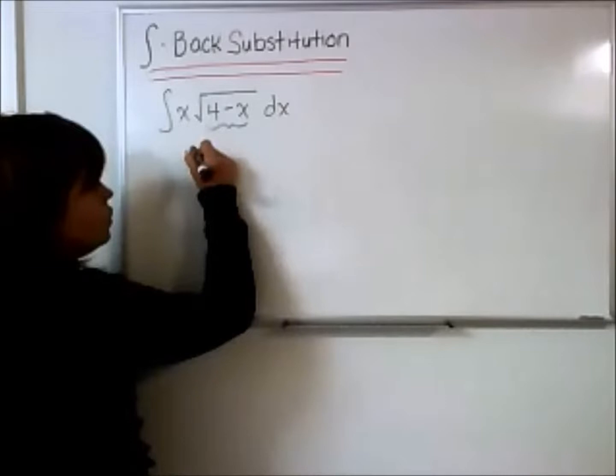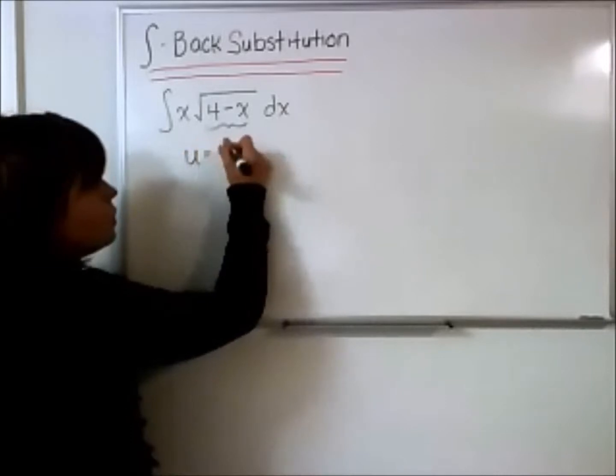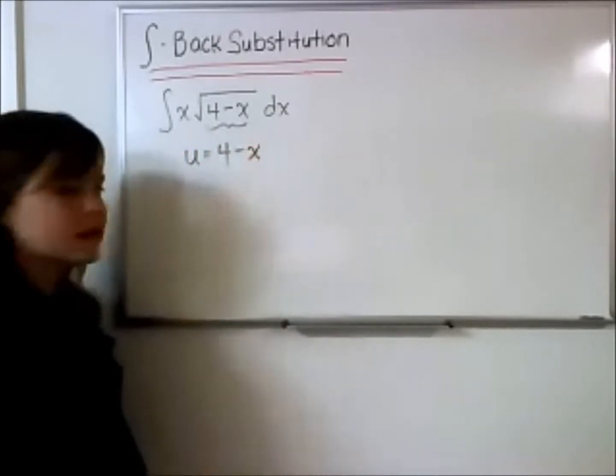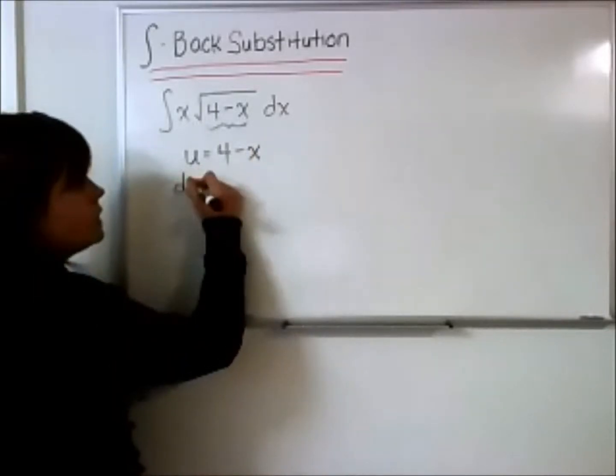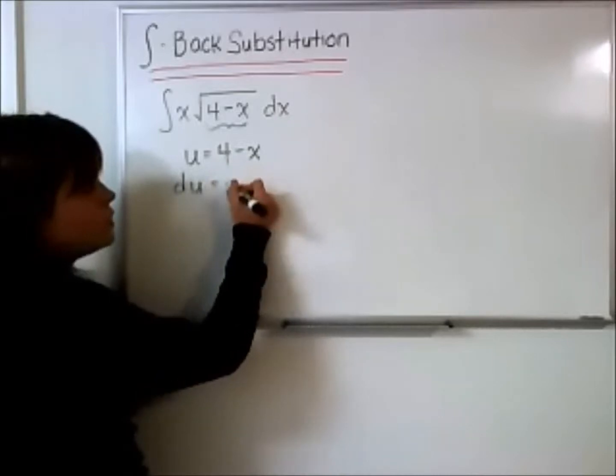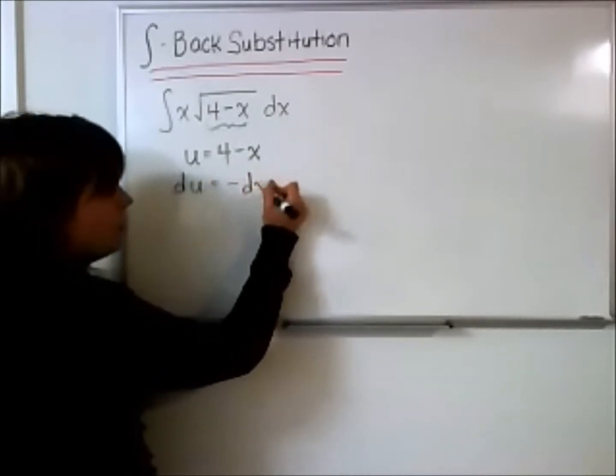So I'm going to choose u equal to 4 minus x. That means that du is equal to the derivative here, which is negative dx.